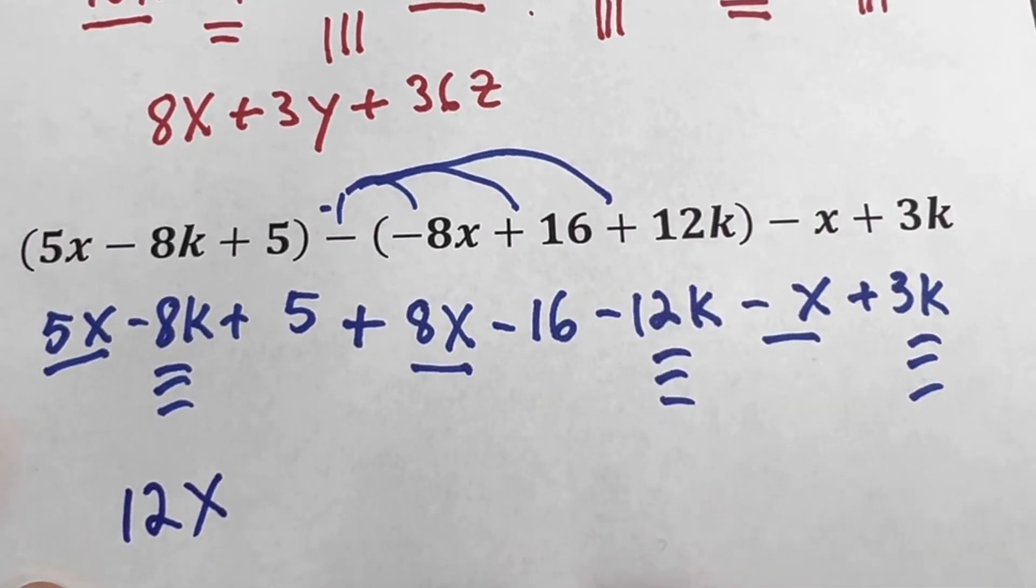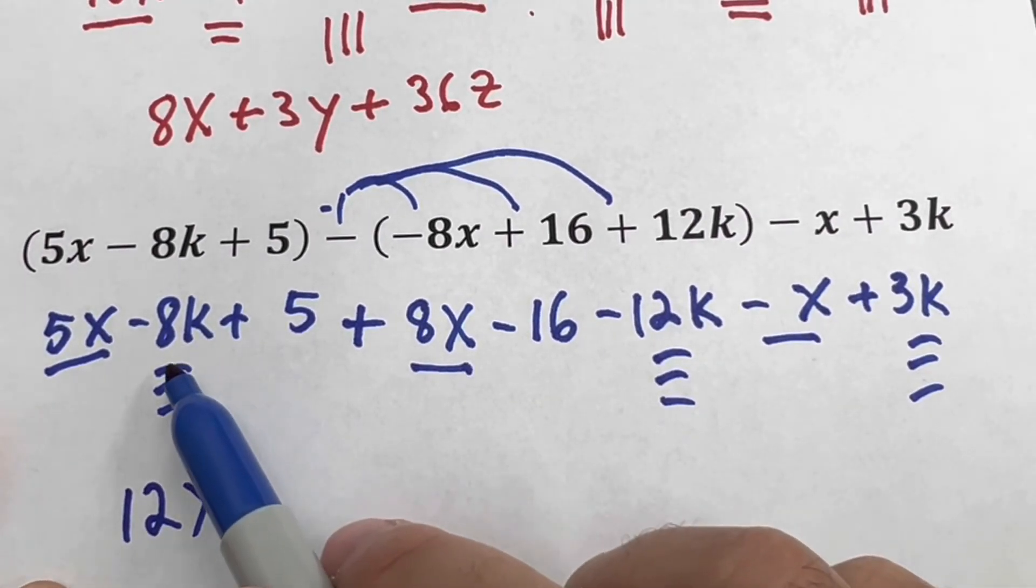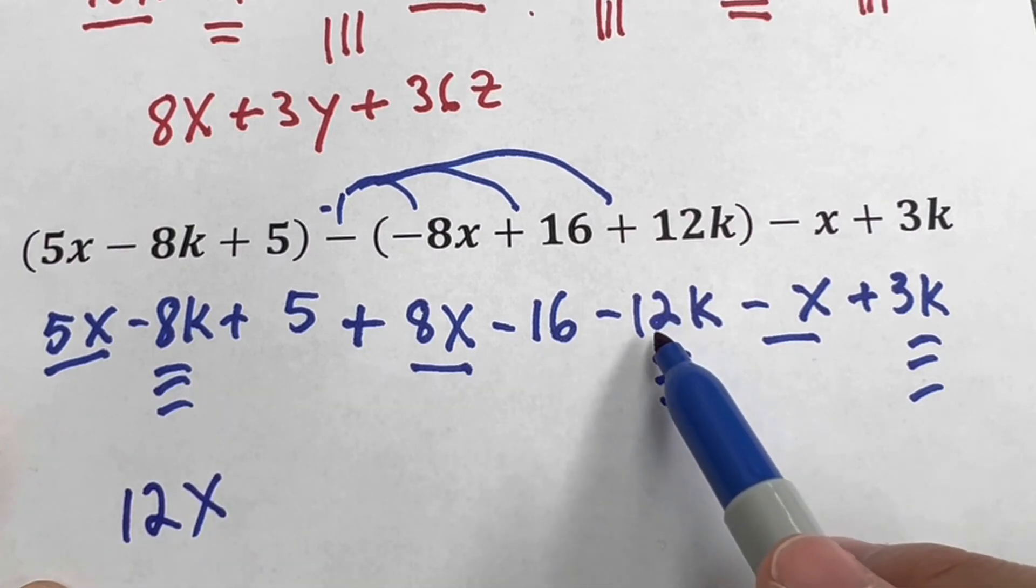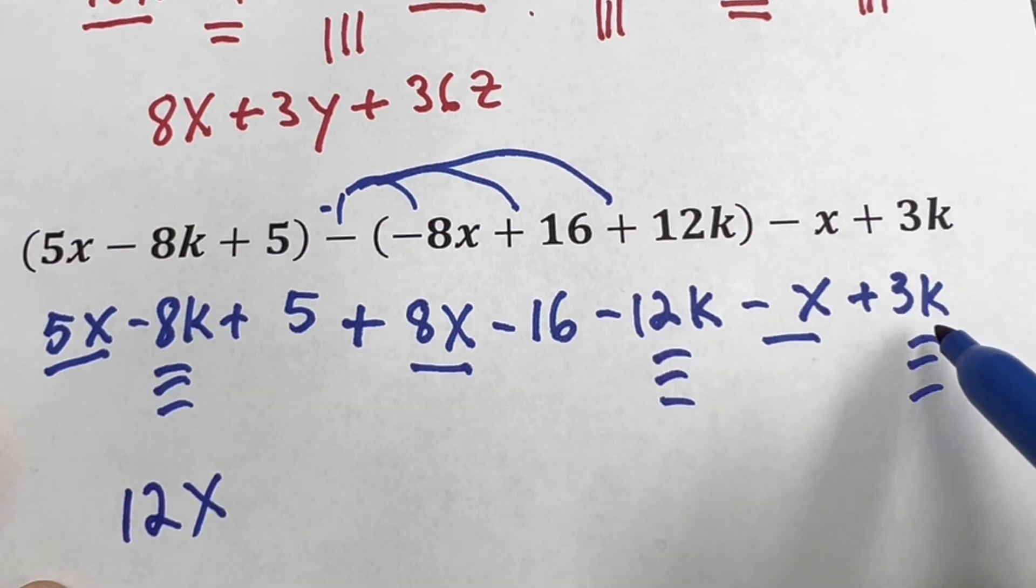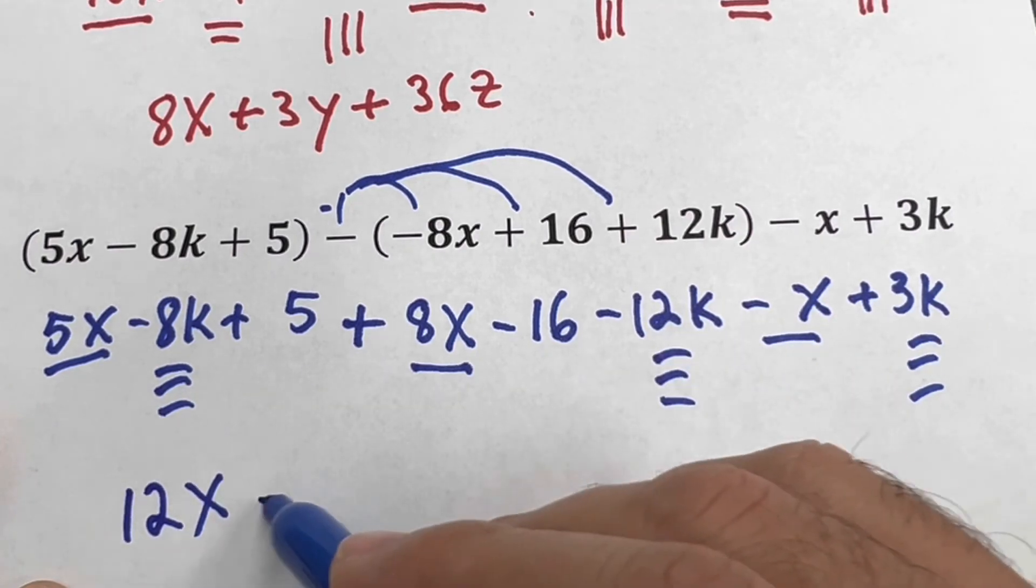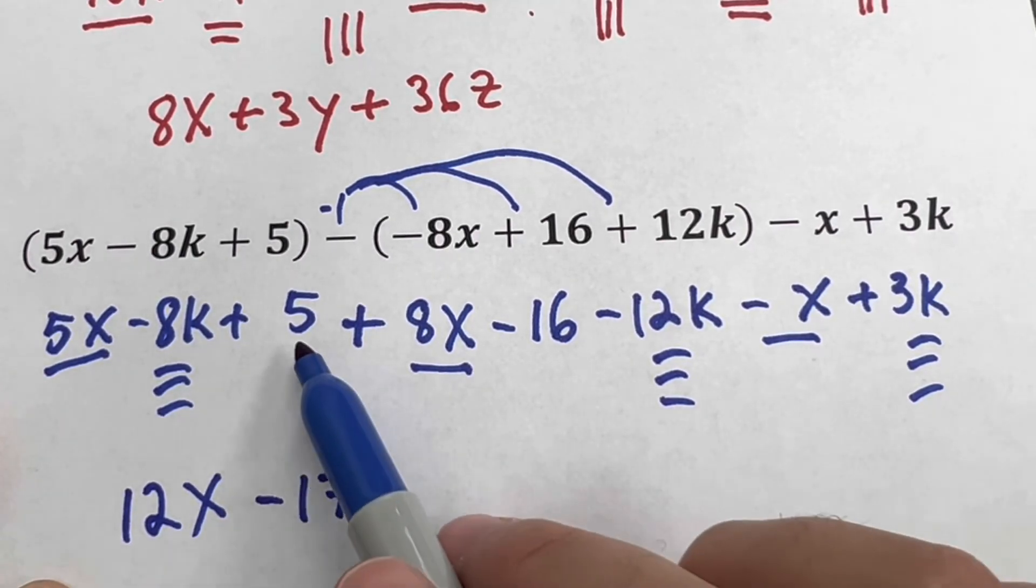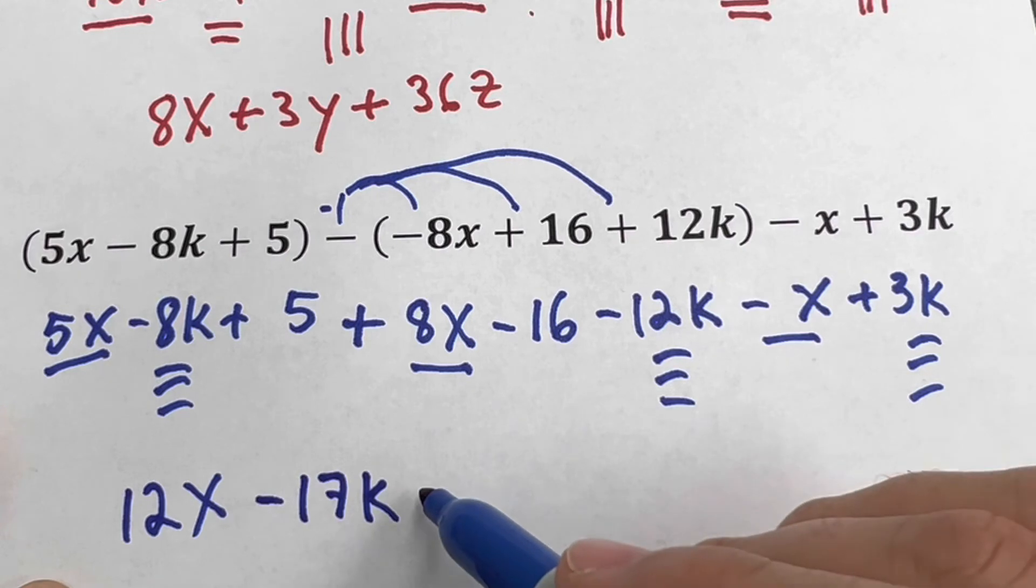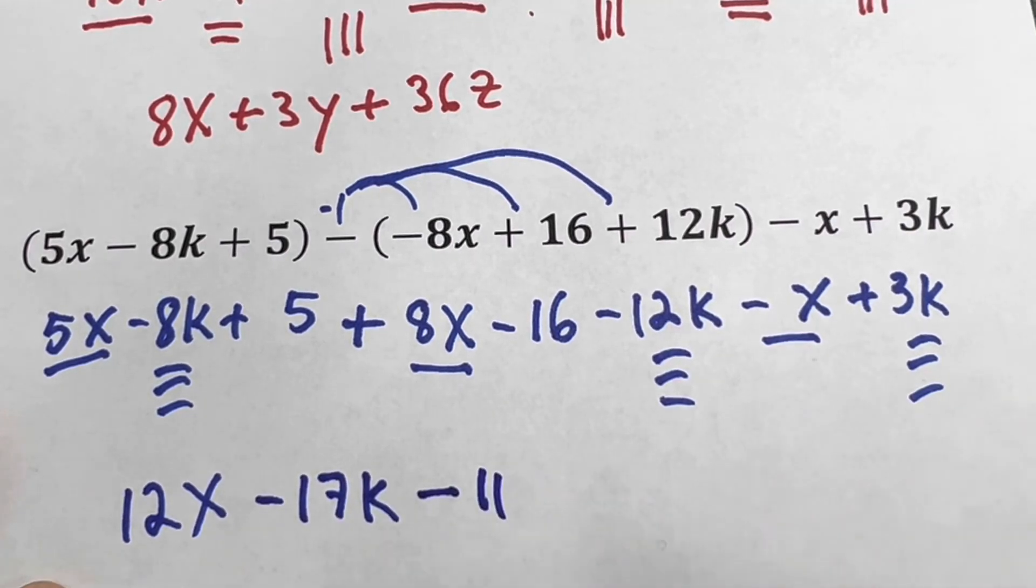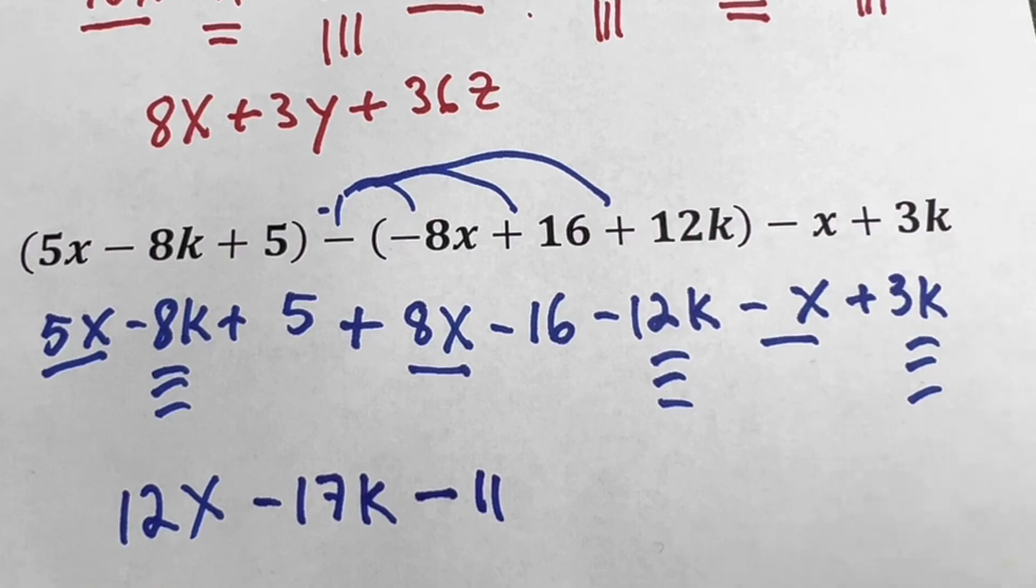Then I have the k: -8k - 12k, that's -20, plus 3k, so -17k. And then the numbers: 5 minus 16, it will be -11. So done, that's it. This is simplifying, adding, and subtracting polynomials.